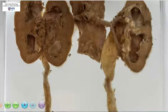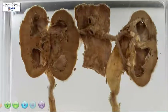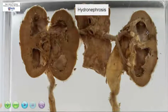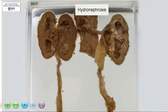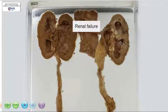We can see that the renal pelvis is also dilated, and so are the calyces. When you have a dilated pelvicocalyceal system associated with atrophy of the renal parenchyma, this is called hydronephrosis. Due to progressive destruction of the renal parenchyma, including the glomeruli as well as the tubules, this can eventually result in renal failure.